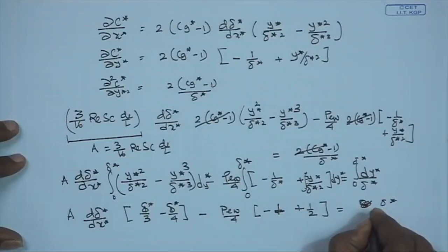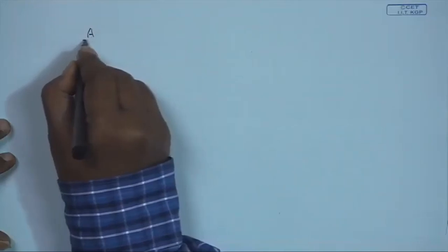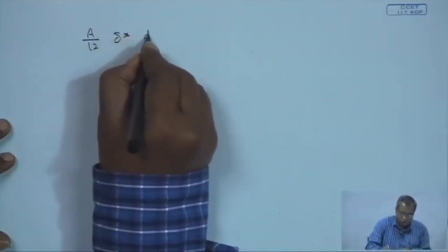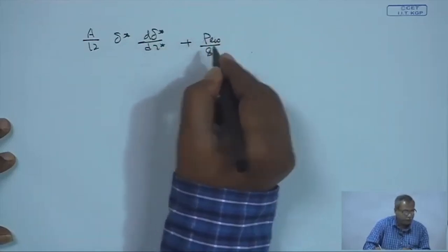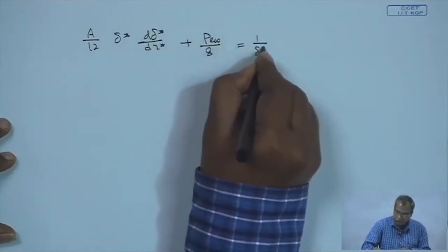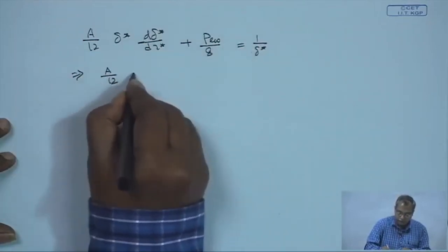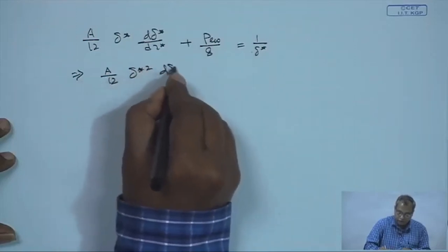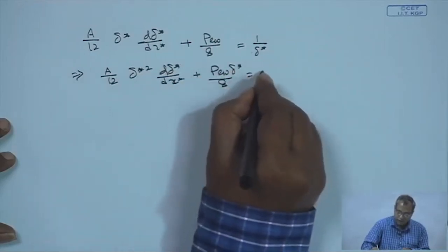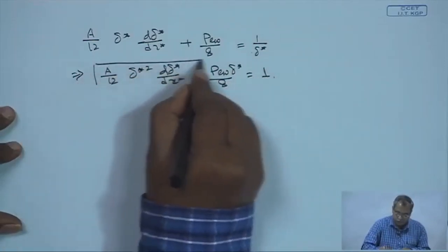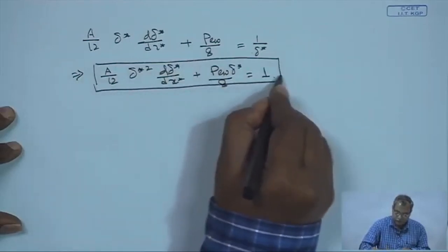After completing the integration and simplification, we obtain: A d(delta*)/dx* times (1/12) plus p_w/8 terms integrated over the boundary layer, which ultimately gives A/12 times delta*² d(delta*)/dx* plus p_w delta*/8 equals 1. This is the form of the governing equation we obtain after this process.